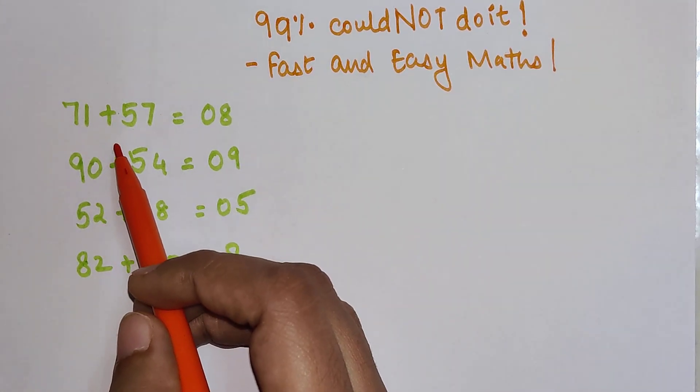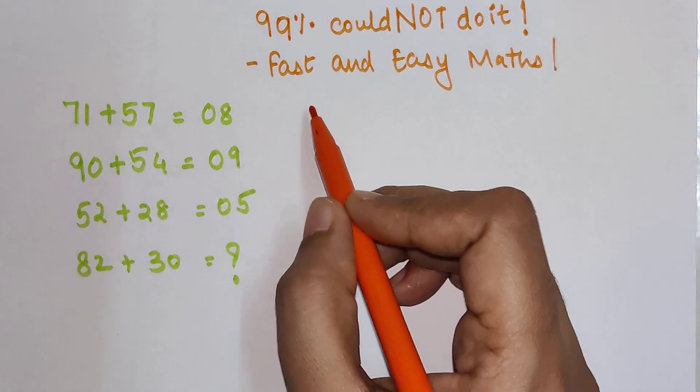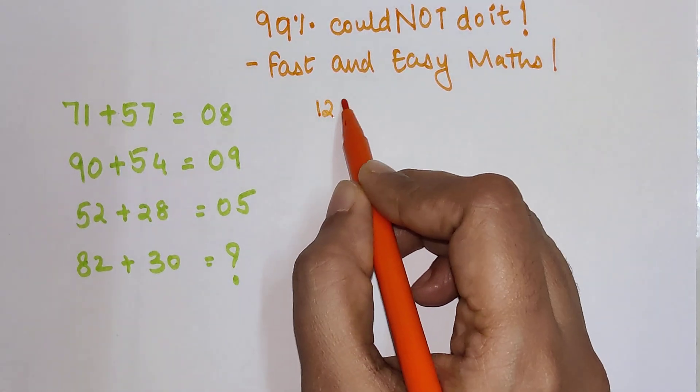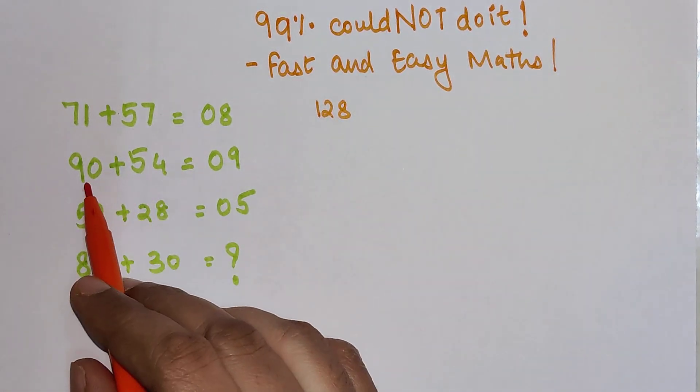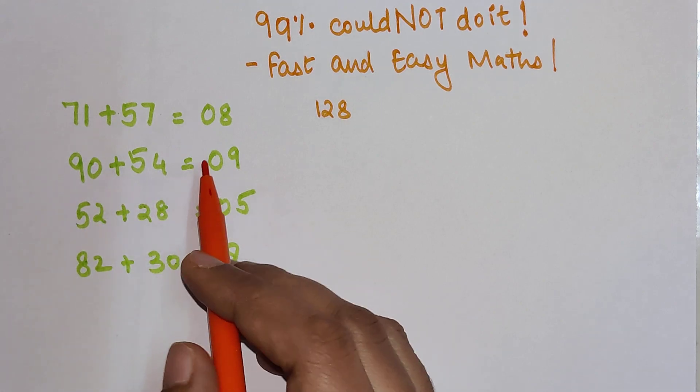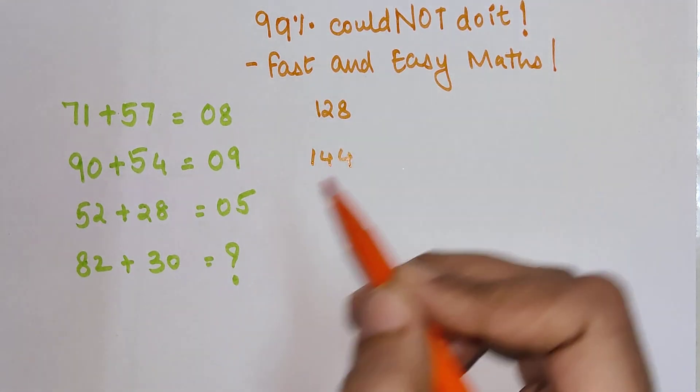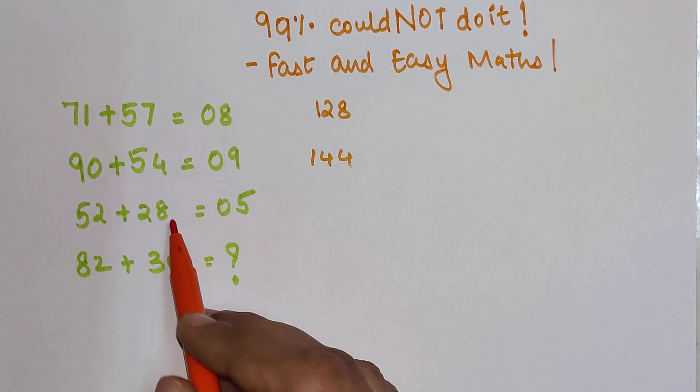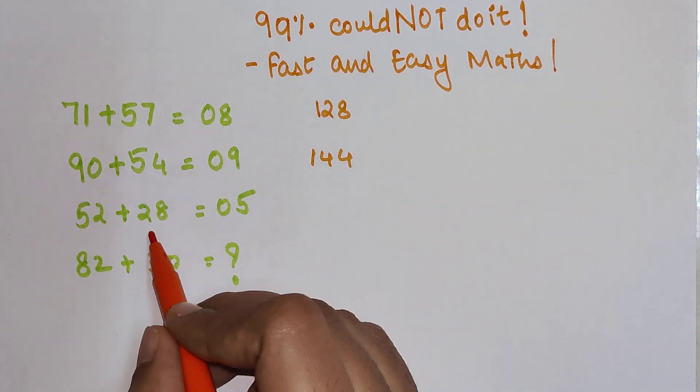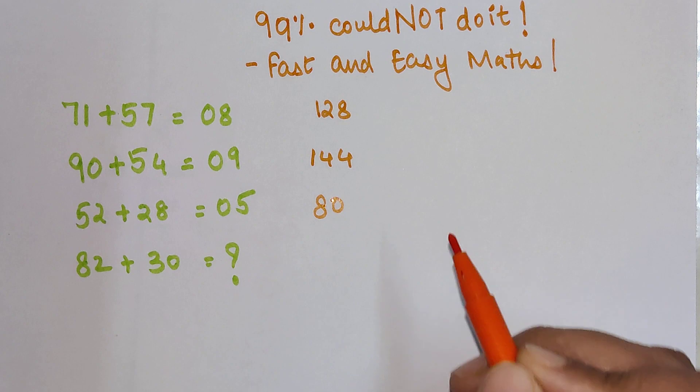Okay, so what I did was I simply started adding. So when you add 71 plus 57 I am getting 128. Similarly, when I add 90 plus 54 I am getting 144. Then you add 52 plus 28 is getting me 80.